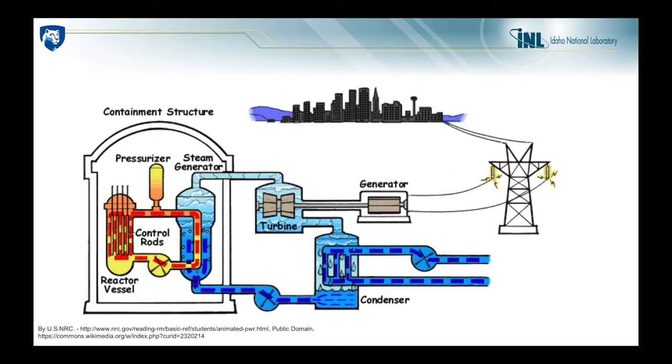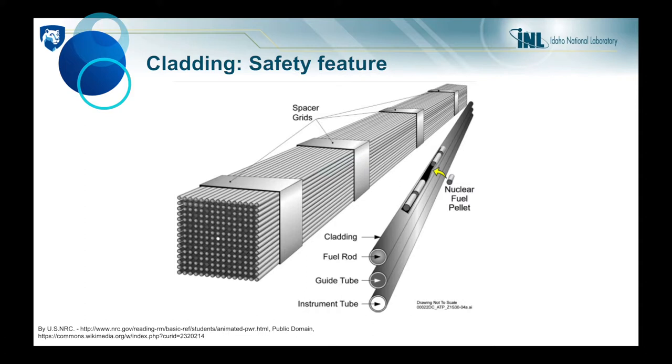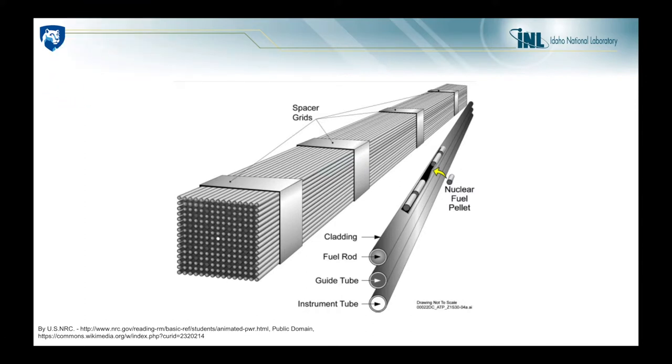Here is a nuclear power plant. My research focuses on the part of the reactor pressure vessel called the fuel rod. The fuel rod is made of cladding material that encapsulates the nuclear fuel pellet, thus preventing the release of nuclear material. It is one of the most important safety features of a nuclear power plant and my project's goal is to assess its integrity.